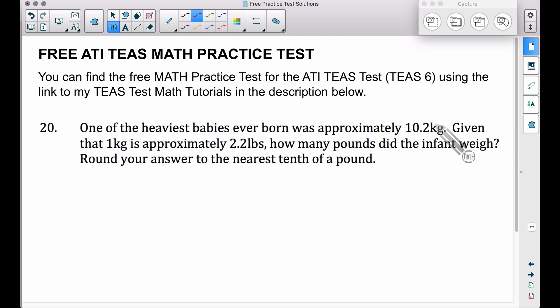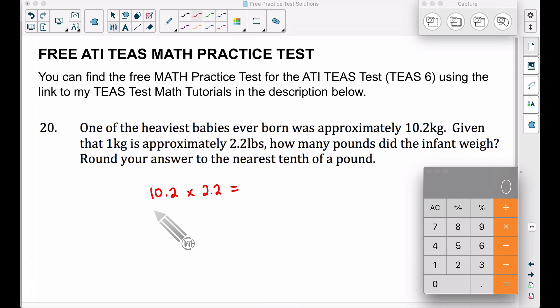Well, this baby weighed 10.2 kilograms. For every single one of these 10.2 kilograms, that represents 2.2 pounds. Therefore the fast way to do this is take 10.2 kilograms, multiply it by 2.2 pounds per kilogram.